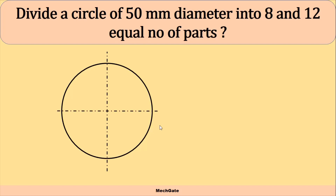Each division of the circle will include an angle of 30 degrees. We already know the concept of how to trisect a right angle. So if we trisect each and every quadrant of the circle into three equal parts, ultimately we will get our circle divided into 12 parts. We will follow that method. If you haven't watched that video, you can click on the 'i' button.